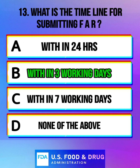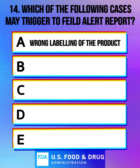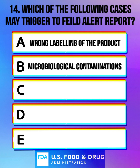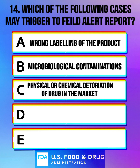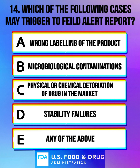Which of the following cases may trigger a field alert report? Option A: wrong labeling of the product. Option B: microbiological contaminations. Option C: physical or chemical deterioration of drug in the market. Option D: stability failures. Option E: any of the above. The correct answer is any of the above.